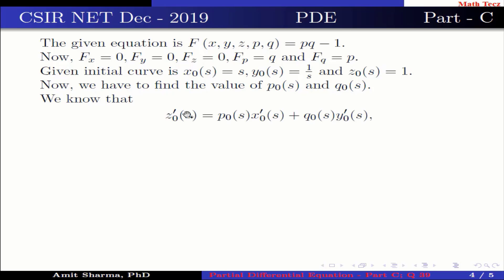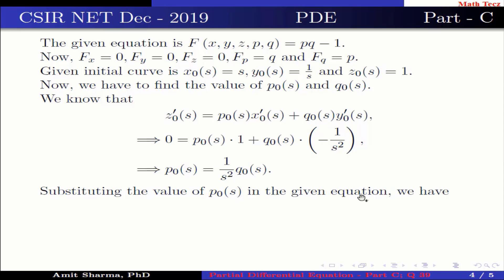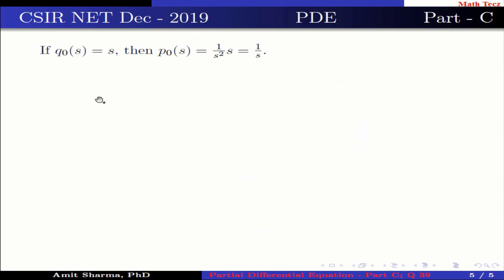We know that z0′(s) = p0(s)·x0′(s) + q0(s)·y0′(s), which implies 0 = p0(s)·1 + q0(s)·(−1/s²), which implies p0(s) = (1/s²)·q0(s). Substituting into the given equation, (1/s²)·q0(s)·q0(s) = 1, so q0(s)² = s², which gives q0(s) = ±s. If q0(s) = s, then p0(s) = 1/s. If q0(s) = −s, then p0(s) = −1/s.